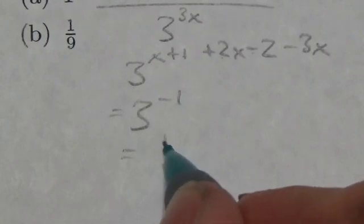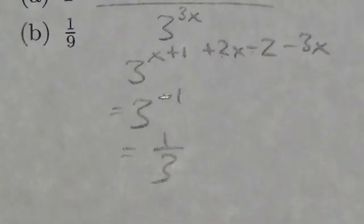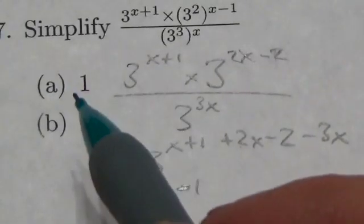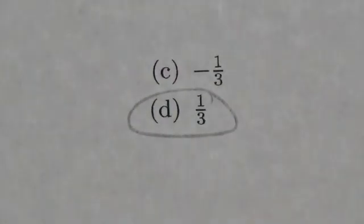And we know that that is the same as 1 over 3. That negative in there is responsible for a division. Dividing by 3 to the 1 here. So now I've just got to look at my options here. A, B, C, and D. And my answer is B.